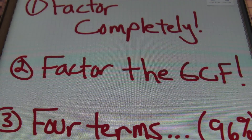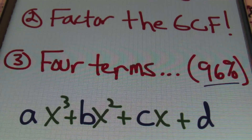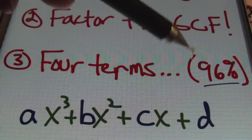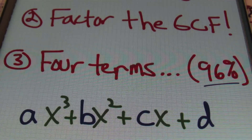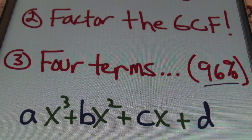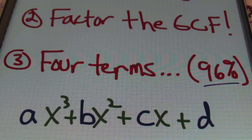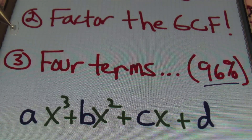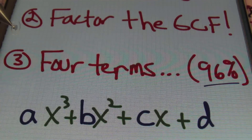Factor out the GCF — the greatest common factor. Look to see if all the terms have something in common. Also, this method — factoring by grouping — is basically going to present itself to you anytime you have four terms. It's not going to happen 100% of the time; you may be dealing with a prime polynomial, meaning it cannot be factored, or you may need to use a different method.